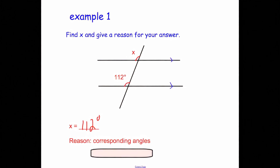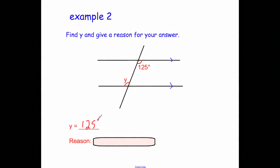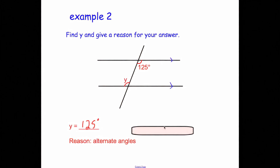Next example: find Y and give a reason for your answer. We have an obtuse angle of 125 degrees and Y, which is also obtuse. They are alternate to each other — you can see the Z shape — so they're both the same. That means Y is 125 degrees, and the reason is they are alternate angles.